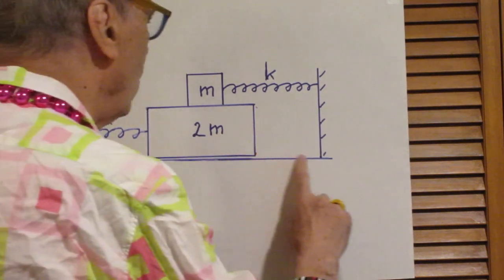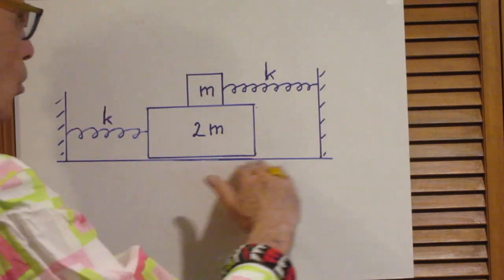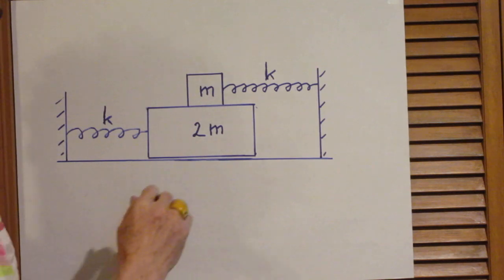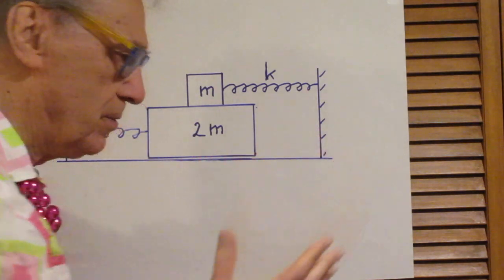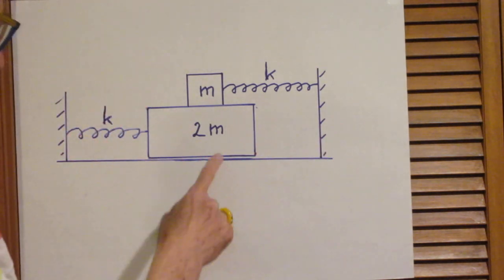This is a horizontal table surface, and it's frictionless. It's important, it's frictionless.